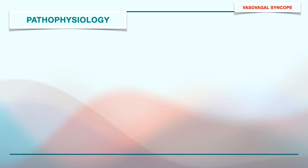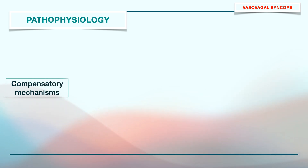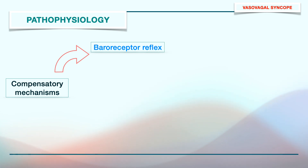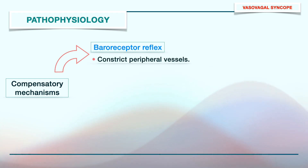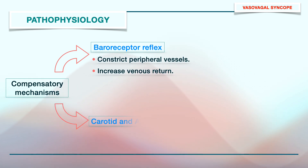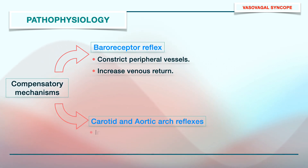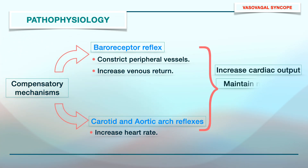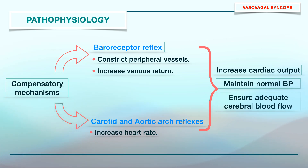Now as the blood pressure begins to fall, compensatory mechanisms are activated. These include the baroreceptor reflex that constricts peripheral vessels to increase the venous return to the heart, and carotid and aortic arc reflexes that increase the heart rate. This increases the cardiac output, maintains close to normal blood pressure, and ensures adequate cerebral blood flow.